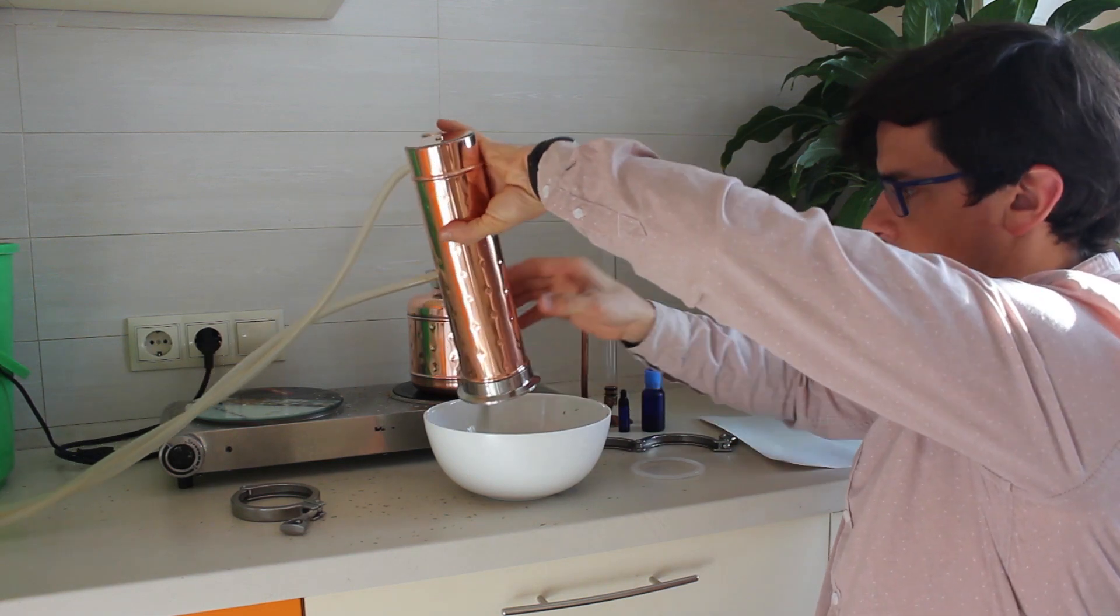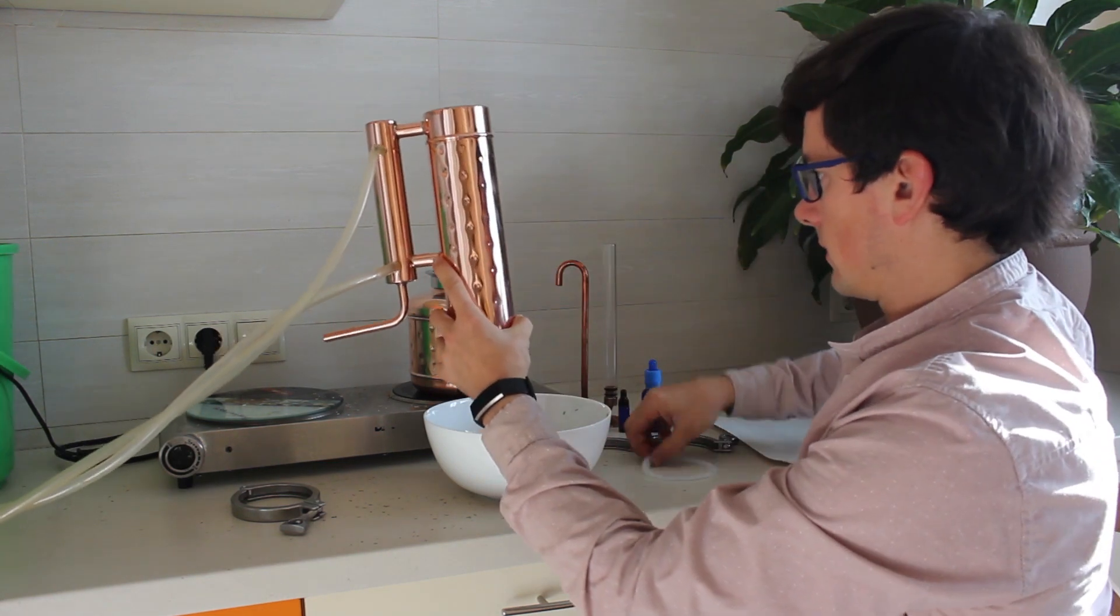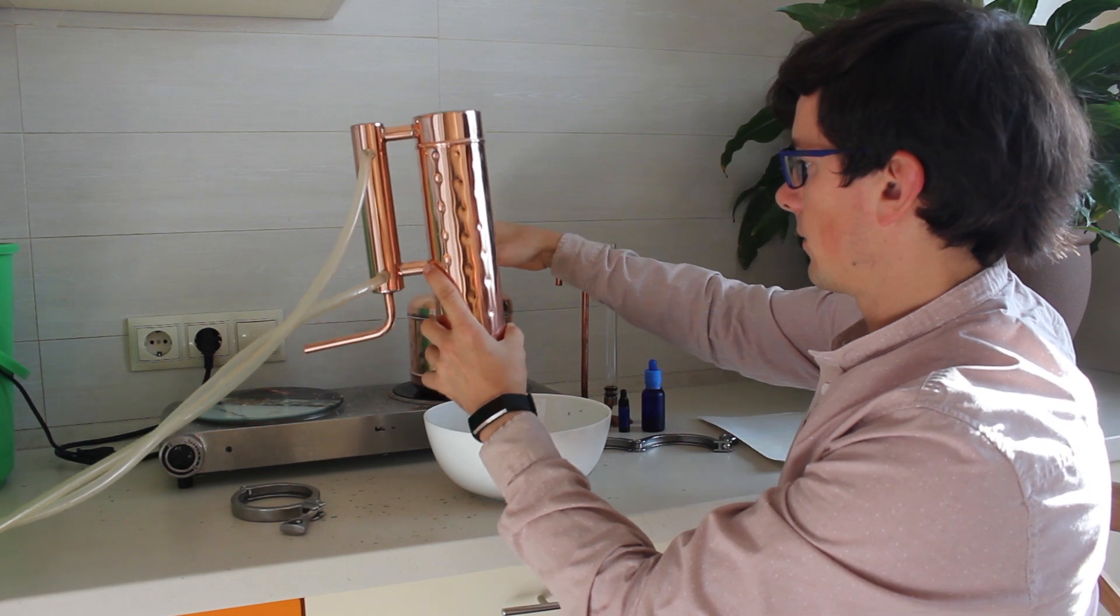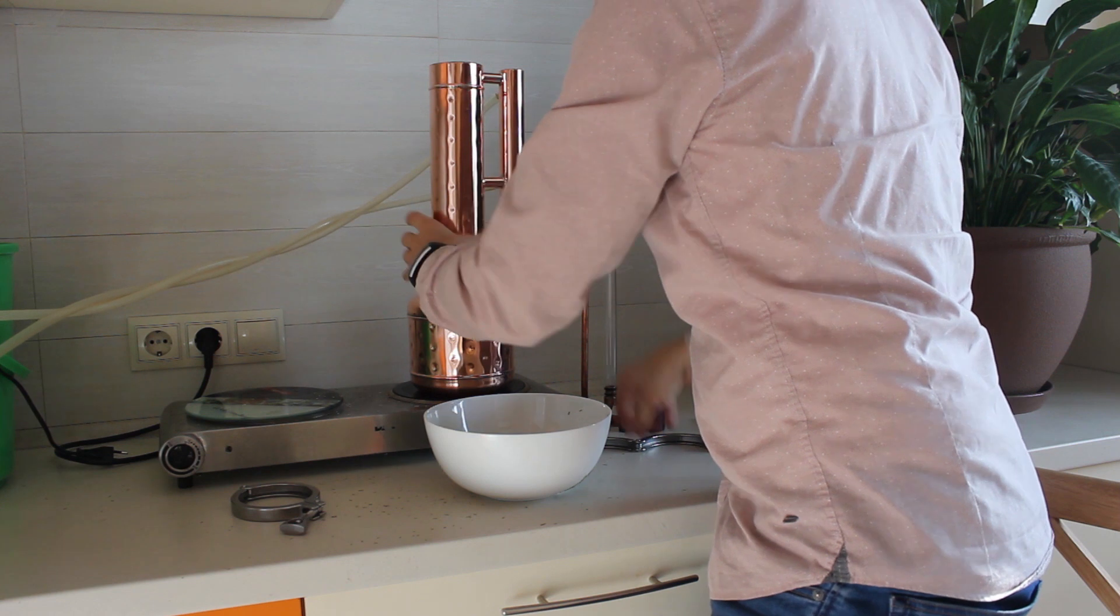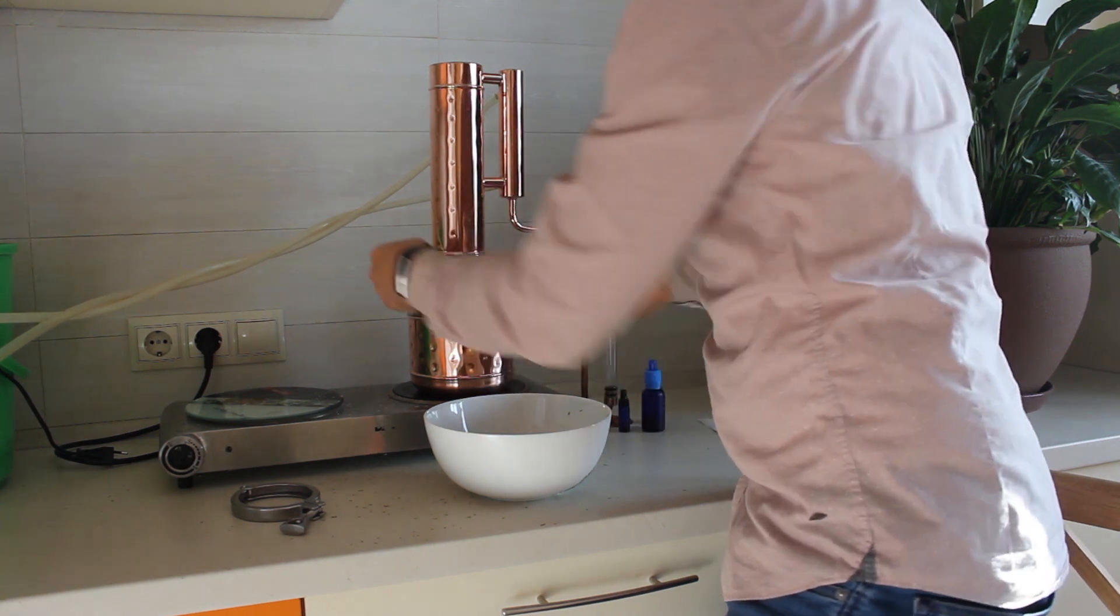So I close it like this, and then I put silicone gasket on top of the boiler and I put the column and close it with a clamp.